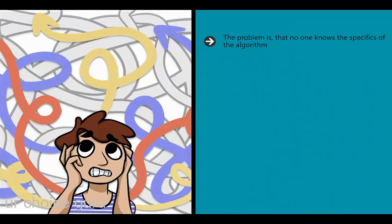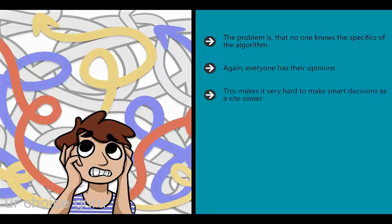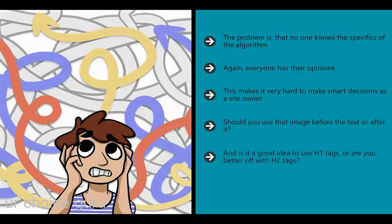The problem is that no one knows the specifics of Google's algorithm. We know Google likes keywords used subtly, and our best guess is that the ideal keyword density is about 1-3%, but we don't know precisely how many times Google wants us to repeat a phrase. We don't know the tipping point where it becomes too much, or whether it's better to focus on just one keyword or several. For that reason, the best option is to run A/B tests - the other term for split tests - to see which changes positively affect your search ranking.